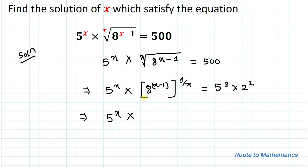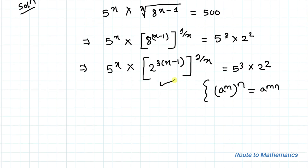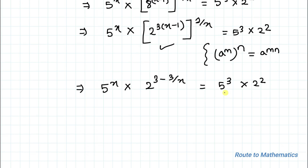So here we can write 5 to the power x, multiplied with 8 written as 2 to the power 3, giving us 2 to the power 3 times (x minus 1), whole to the power 1 by x, equals 5 to the power 3 multiplied with 2 to the power 2. We know the exponential rule that a to the power m, whole to the power n equals a to the power m times n. Applying this rule, the equation becomes 5 to the power x multiplied with 2 to the power 3 minus 3 by x, equals 5 to the power 3 multiplied with 2 to the power 2.